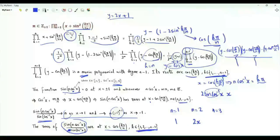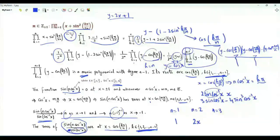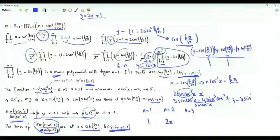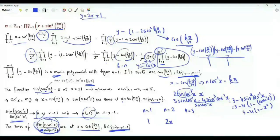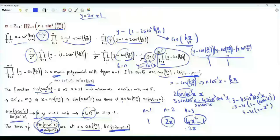If n equals 3, in the numerator we have sine of 3 times cosine inverse x. That's 3 sine(cosine inverse x) minus 4 times the cube of sine(cosine inverse x). When we divide, we get 3 minus 4 times the square of sine(cosine inverse x), which equals 3 minus 4 times (1 minus x squared). When n equals 3, this function of x is 4x squared minus 4 plus 3, which is 4x squared minus 1.